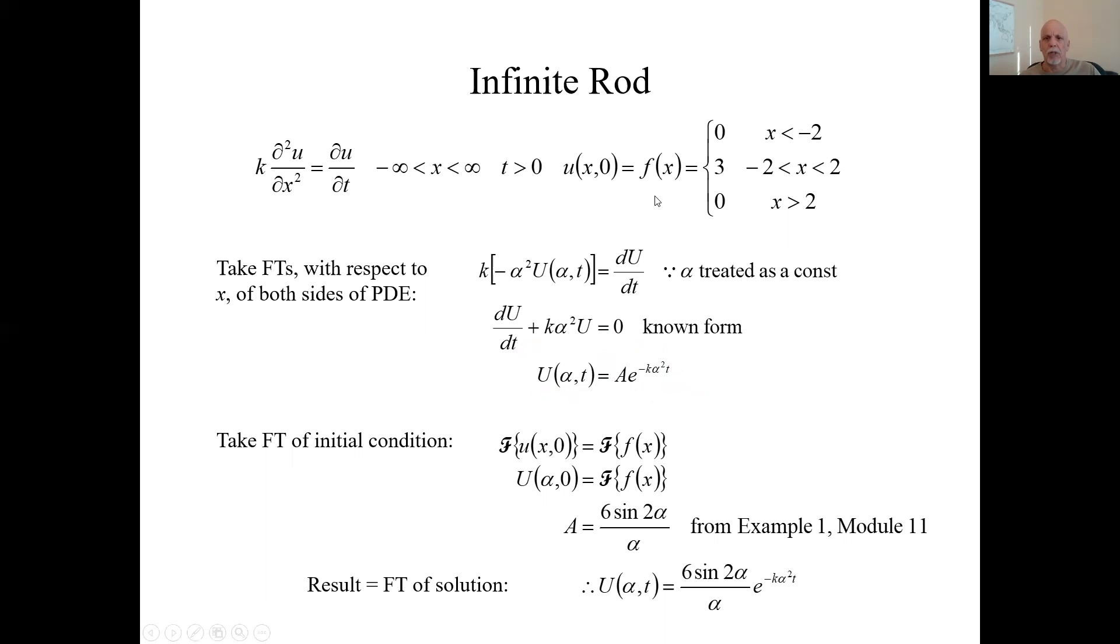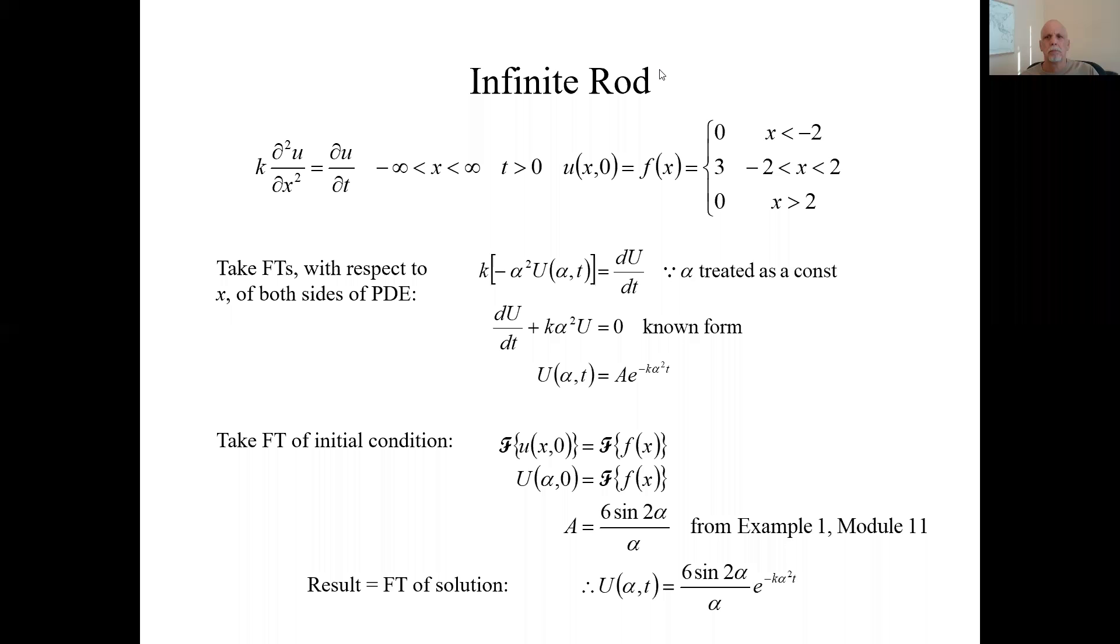We also need to take Fourier transform of the initial condition. The Fourier transform of little u at zero is the Fourier transform of this initial condition, little u x at time zero, is this f of x. So that Fourier transform is the Fourier transform of this function. And that equals the initial Fourier transform, big U alpha at time zero. So they both equal the same thing. And we found in a previous recording we found the Fourier transform of this. I'll just tell you what it is. It's right here.